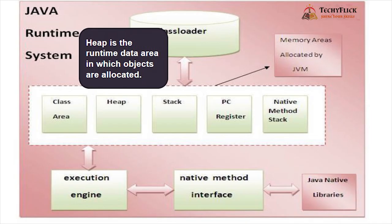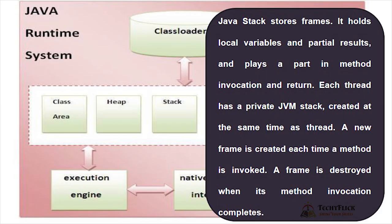Heap is the runtime data area in which objects are allocated. Java stack stores frames and holds local variables and partial results, playing a part in method invocation and return. Each thread has a private JVM stack created at the same time as the thread. A new frame is created each time a method is invoked, and a frame is destroyed when its method invocation completes. This makes memory use very efficient — we use less memory space.